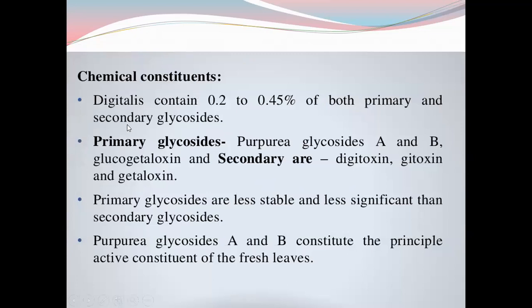Chemical constituents: Digitalis contains 0.2 to 0.45% of both primary and secondary glycosides. Primary glycosides are purpurea glycosides A and B. Secondary glycosides are digitoxin, gitoxin, and gitaloxin. Primary glycosides are less significant because they are less stable and their activity is less than secondary glycosides.